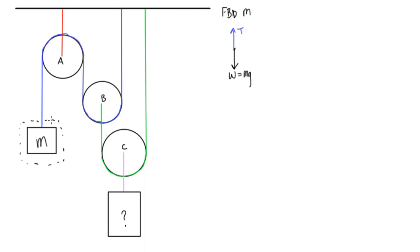As we talked about in previous videos, tension is going to be the same always in a rope, no matter where you are in the rope. So we have tension here, the same tension here, and the same tension here — everywhere along this rope. We could put T's everywhere, as long as it's along the blue line.